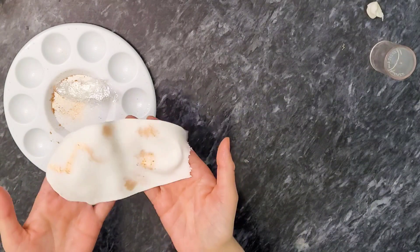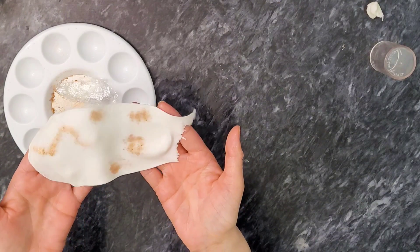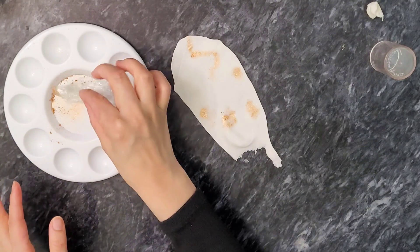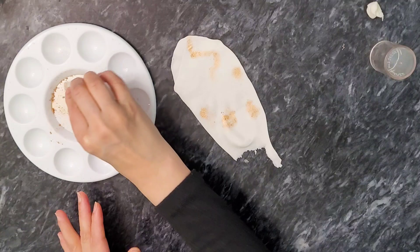When you do it on the cake it will look so much better and amazing. This is just to show you how it's done. So you literally just get some scrunched up cling film and add your luster to it.